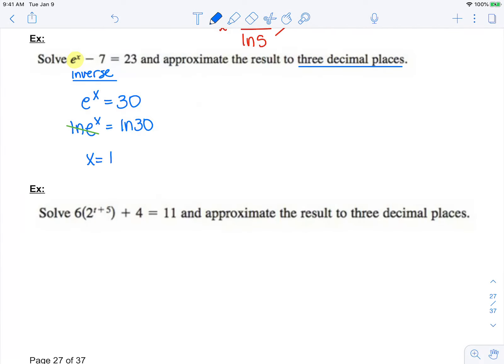now we have x equals ln of 30. And we can plug that into our calculator to get an approximation of 3.401.